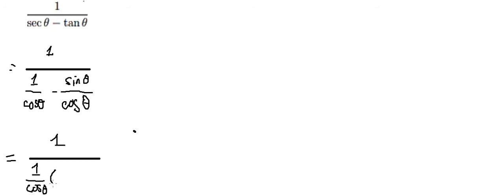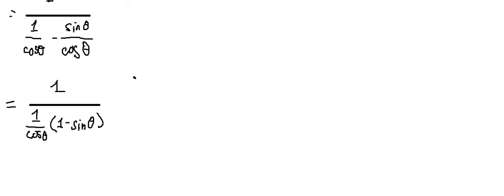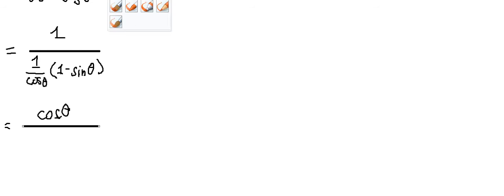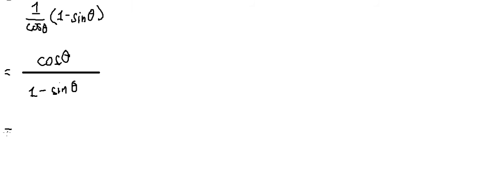So we will get one minus sine theta. Then we move to the next step, where we get cosine theta over one minus sine theta.